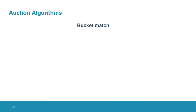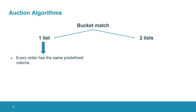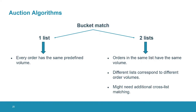Now we move on to the auction algorithms. The first one is the bucket match, and there are actually two versions: the version with one list and the version with two lists. In the version with one list, every order has the same predefined volume. We might still have dummy orders, which are orders of zero volume, but any order with positive volume will have this predefined volume. An investor might want to submit more than this volume, in which case they can submit multiple orders. Because the orders all have the same volume, it is possible to process them very fast, but the problem is that we might end up with a lot of orders to process.